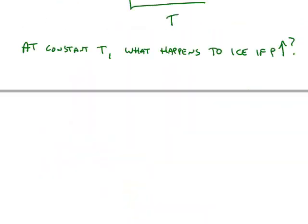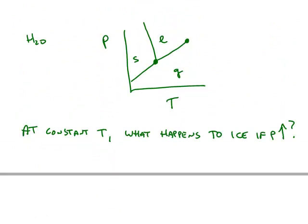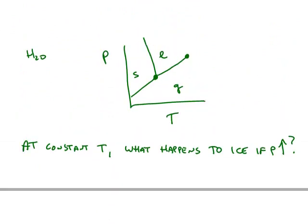The phase diagram of water is a little bit different. Water is unusual that the solid-liquid boundary has a negative slope. In other words, if we were here at this pressure and temperature, the most stable phase of water would be solid. If we keep the temperature constant and increase the pressure, notice we move into the liquid region.